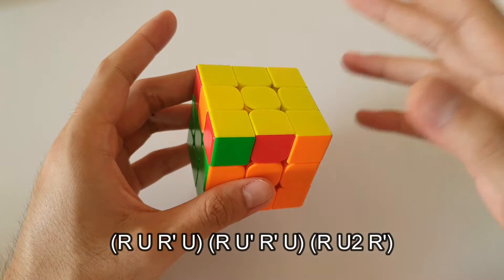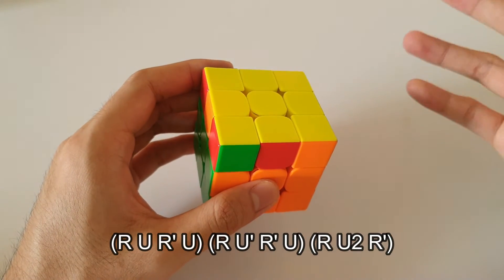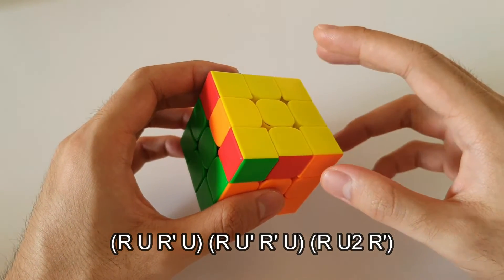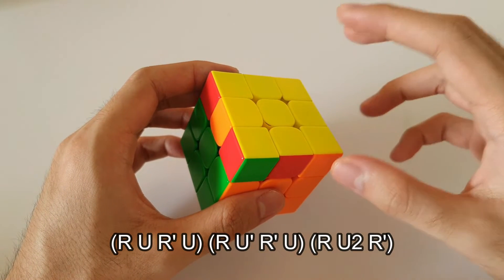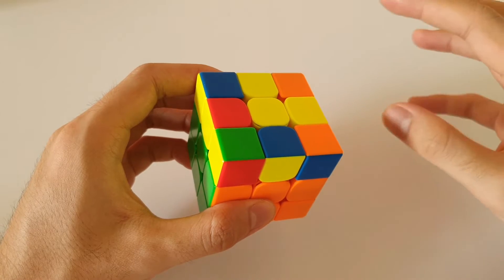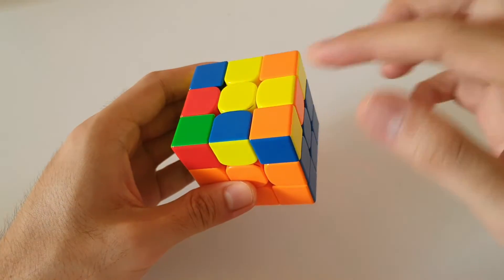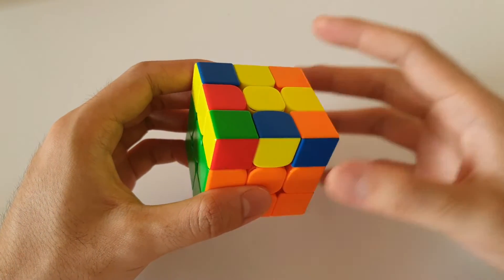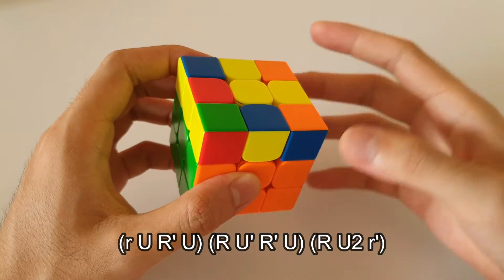And the reason I show that algorithm is because the algorithm for the L-shaped case is exactly the same, but just with wide R moves for the first move and the last move. So to illustrate what I mean, I will now do the algorithm for the L-shaped case and you'll be able to see the similarities between the two.